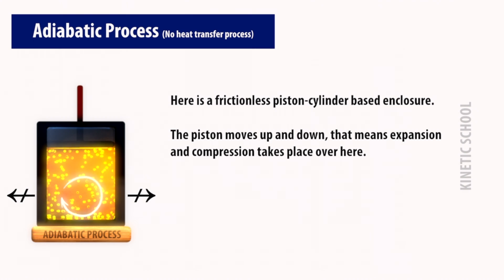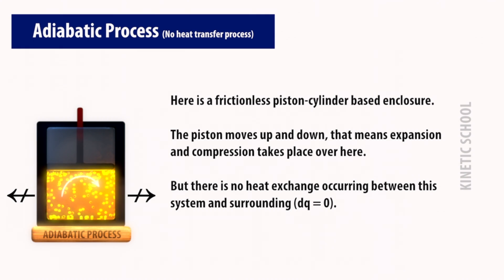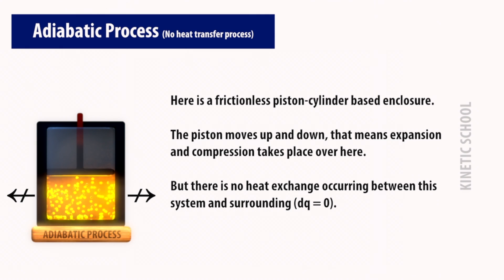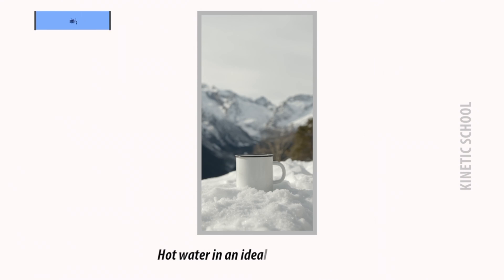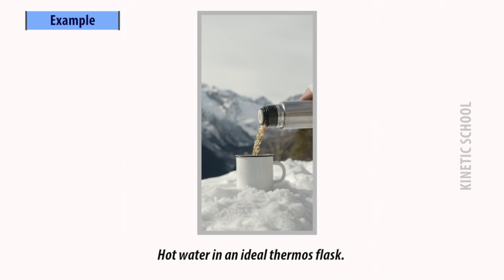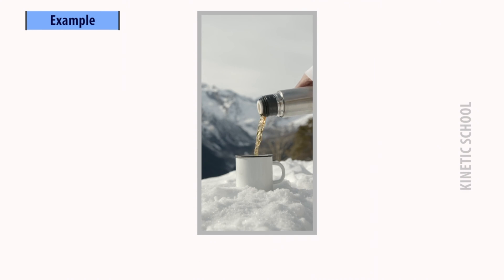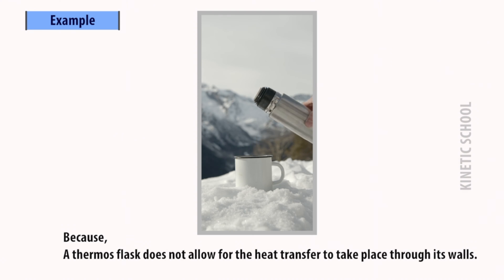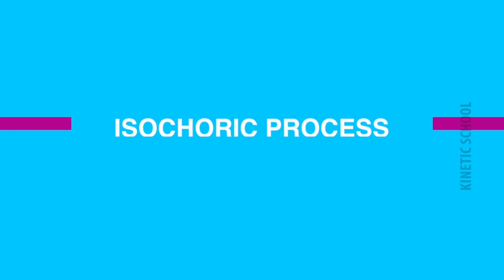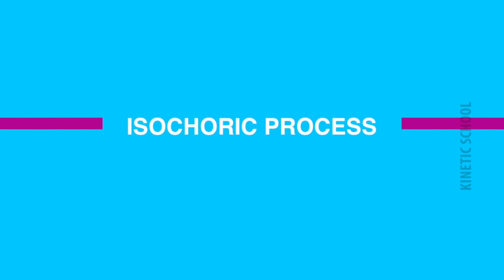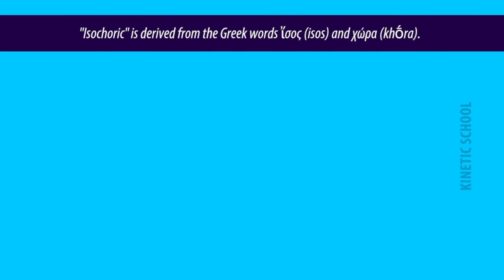Here is a frictionless piston-cylinder enclosure where the piston moves up and down — meaning expansion and compression takes place — but there is no heat exchange occurring between this system and its surroundings. An example is hot water in an ideal thermos, because a thermos does not allow heat transfer to take place through its walls.